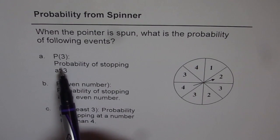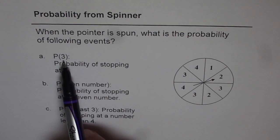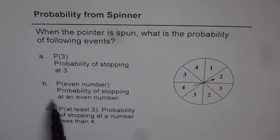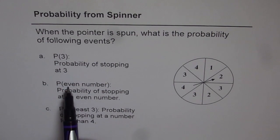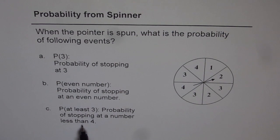First one is probability of stopping at 3. We also write this as P within brackets 3. The second one is probability of stopping at an even number. So you could write this as probability of even number. And third part is probability of stopping at a number less than 4. That means at least 3.